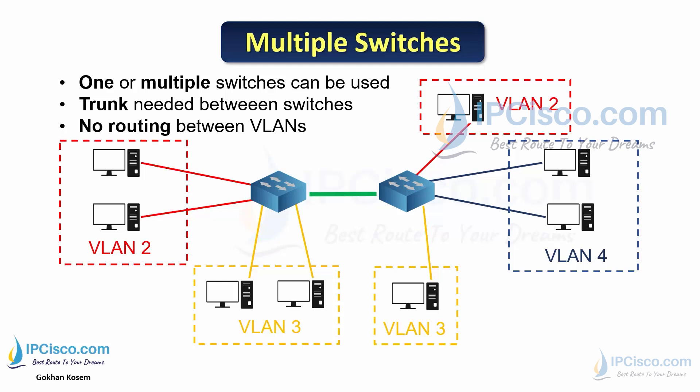In this scenario, there is no routing between VLANs. With trunking, only devices connected to the same VLAN can communicate. Devices in different VLANs cannot communicate with each other. As shown, devices in VLAN 2 can communicate over the trunk link.